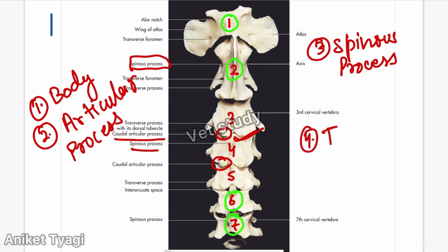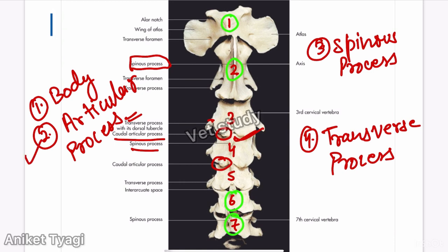The transverse process is divided into an upper and lower part. The base of each transverse process is perforated by the foramen transversarium. This foramen transversarium is a very important and peculiar characteristic feature of the cervical vertebrae, and it is one of their characteristic features.